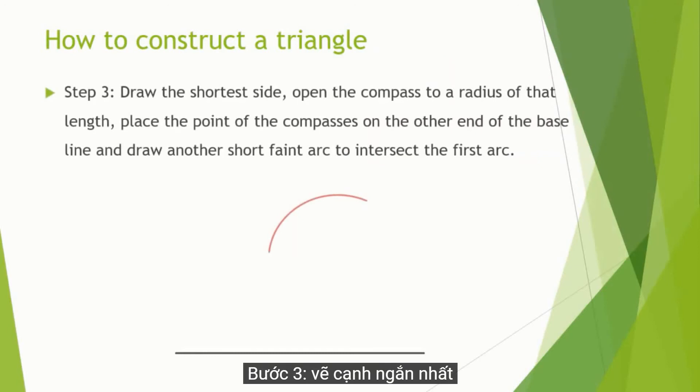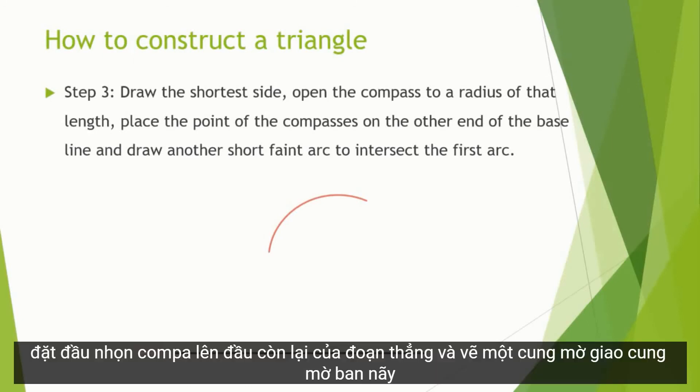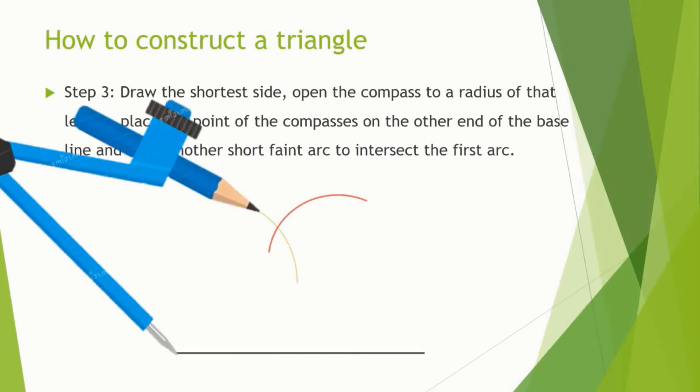Step 3: Draw the shortest side. In this case, the 4cm side. Open the compasses to the radius of 4cm. Place the point on the other end of the 6cm line and draw the second short faint arc to intersect the first arc.